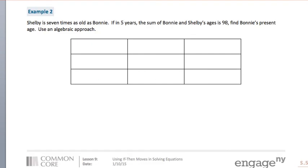Our final example. Shelby is 7 times as old as Bonnie. If in 5 years, the sum of Bonnie and Shelby's ages is 98, find Bonnie's present age, but use an algebraic approach. So what we want to do is first of all label, very important to label, Bonnie and Shelby.